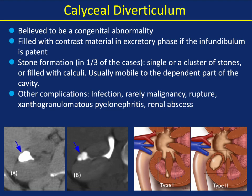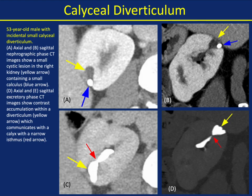A couple things to mention — I put this after the TCCs for a reason. One of them is calyceal diverticuli. Calyceal diverticuli may not opacify early on and so can be confused with a tumor. You can see stone formation in diverticuli, but not necessarily. You can have other complications from infection to rupture to XGP to abscess, and occasionally even malignancies. You can see a type 1 and type 2 here — the type 2 are probably the most confusing. Sometimes the calyceal diverticulum will not opacify early, and you may need delayed scans if you want it to opacify.